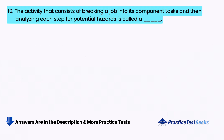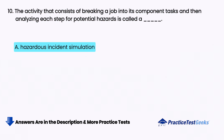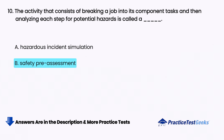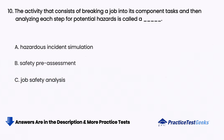The activity that consists of breaking a job into its component tasks and then analyzing each step for potential hazards is called a blank. A. Hazardous incident simulation, B. Safety pre-assessment, C. Job safety analysis, D. Safety breakdown structure.